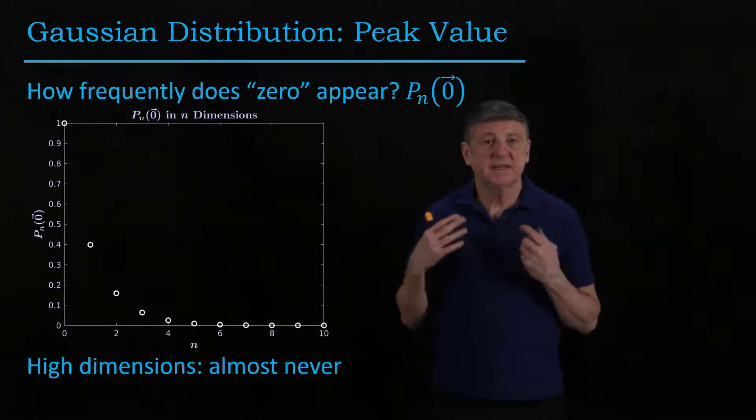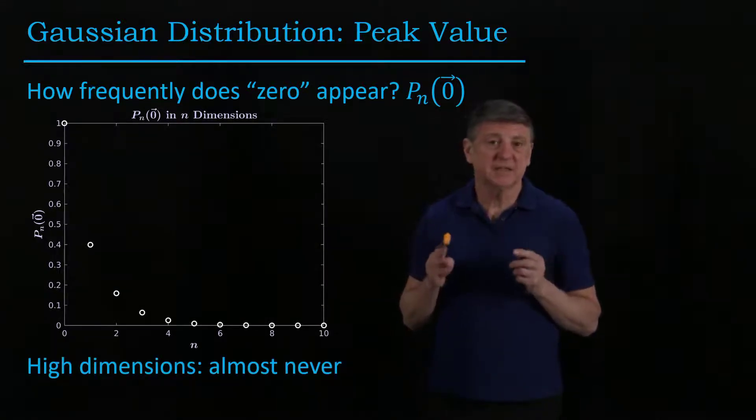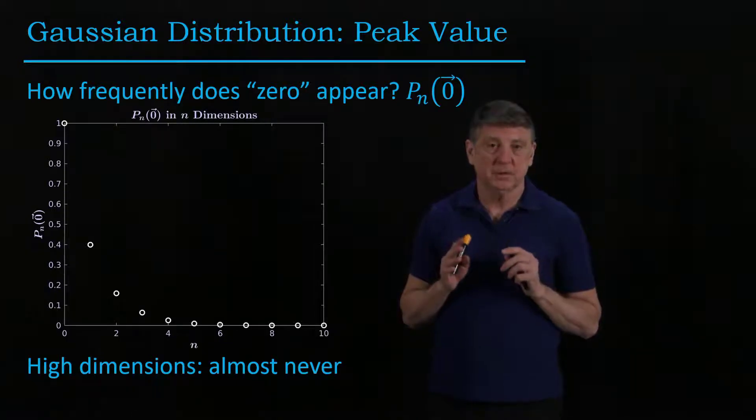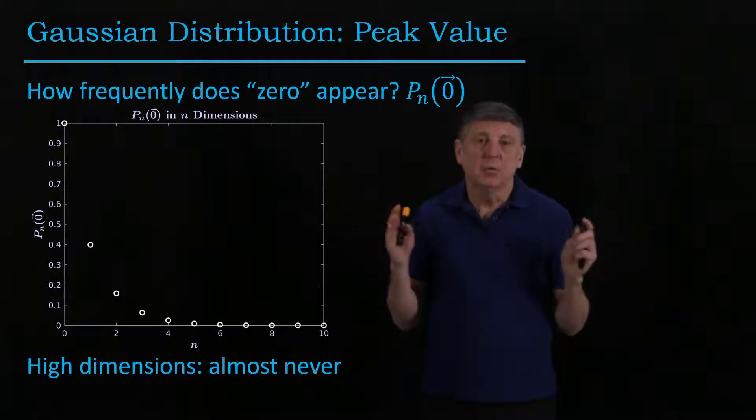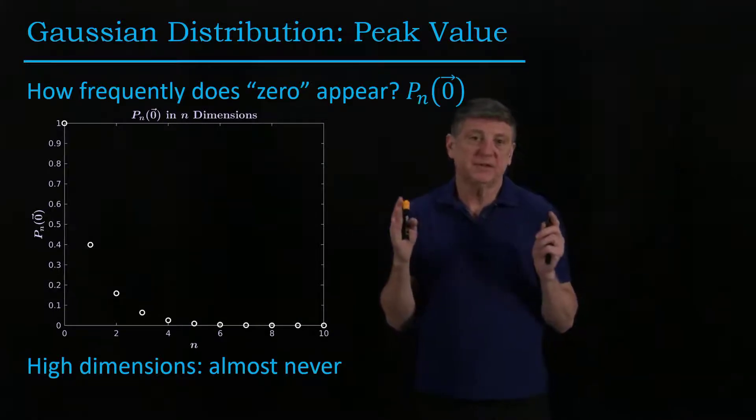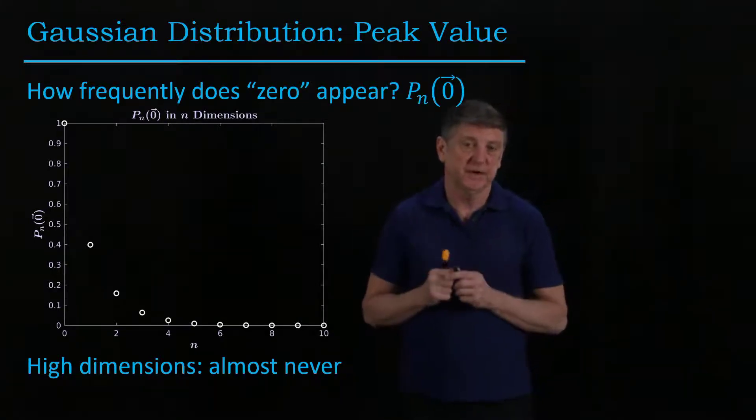So what that means is in high dimensions exactly zero data almost never appear, and that raises the question, well how often does data that's pretty close to the zero vector appear?